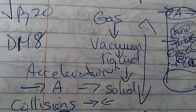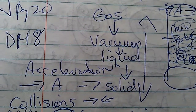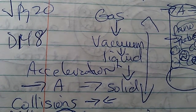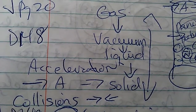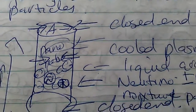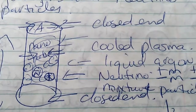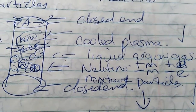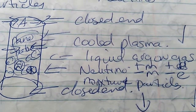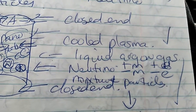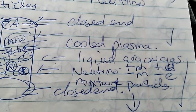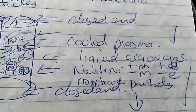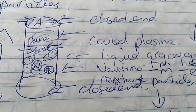Diagram 148 shows the gas to vacuum, to liquid accelerator, to solid, to collisions in a nanotube which is closed — the closed end is at the top, where it accelerates. It shows there's cooled plasma in it, liquid argon gas, and neutrinos, plus and minus mass, and plus and minus electrons, and mixed particles, with the closed end there.